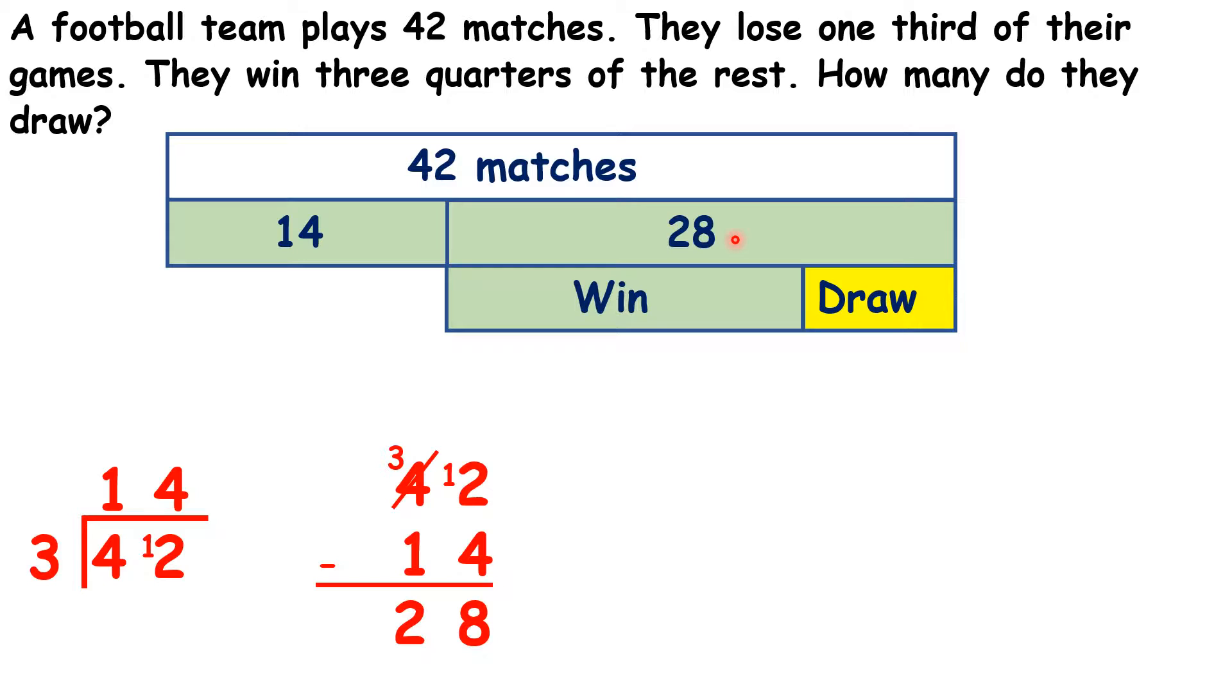Now, we want to know how many are drawn, and if three quarters of the 28 are won, that means one quarter are drawn. And one quarter of 28 is the same as 28 divided by 4, which is 7, so they must have drawn seven matches.